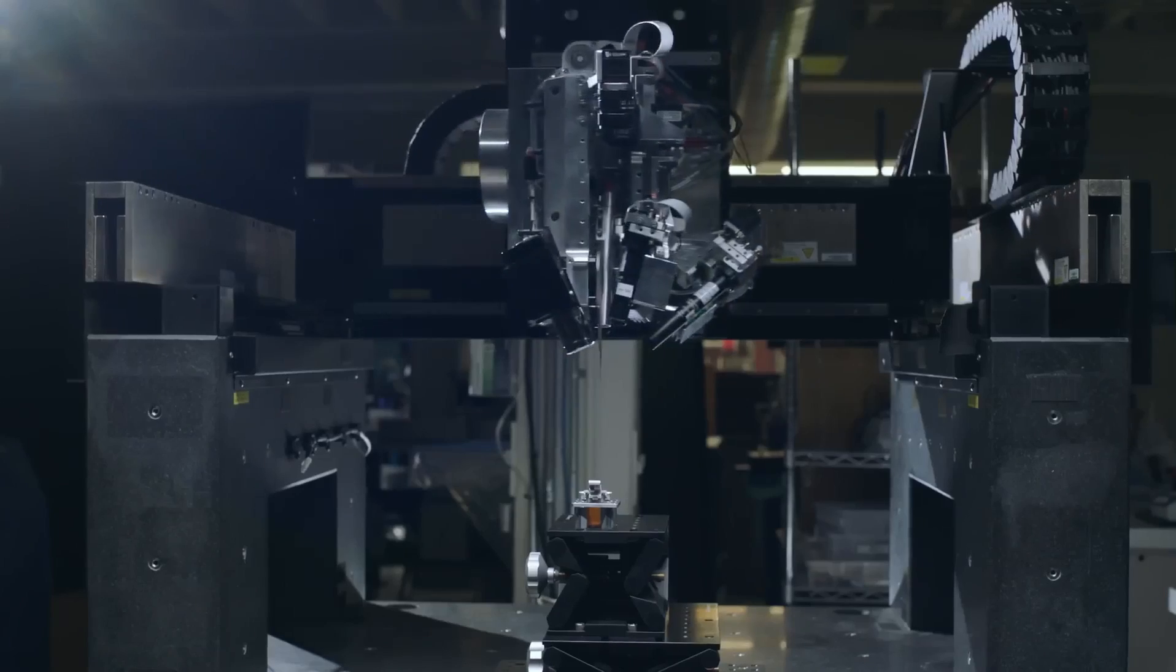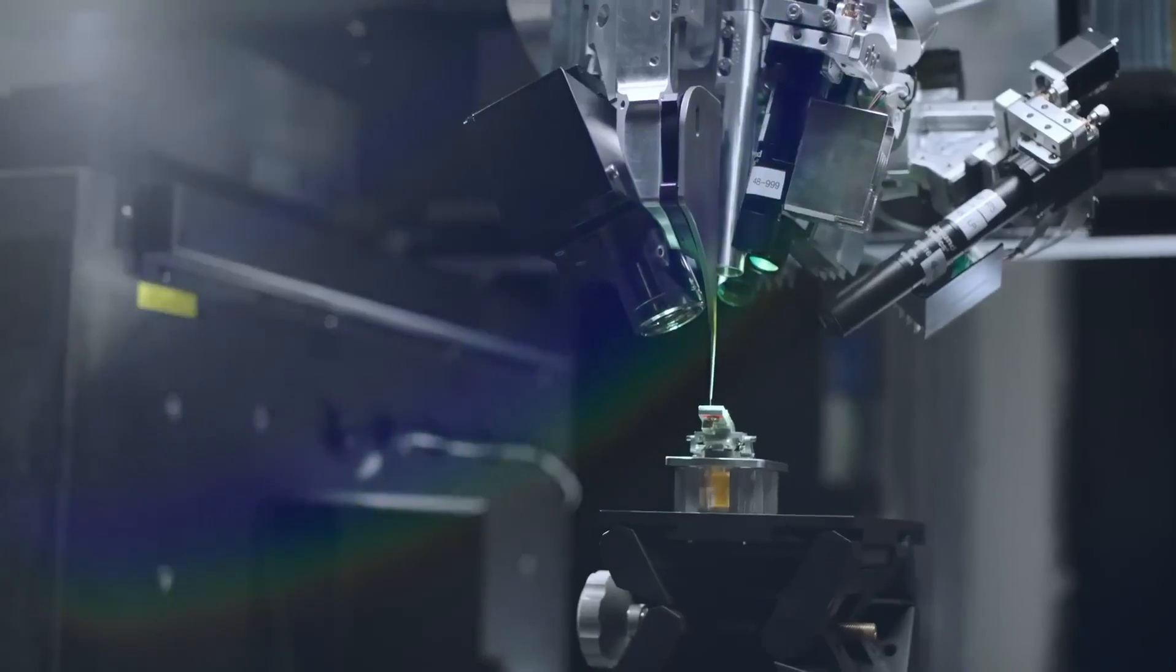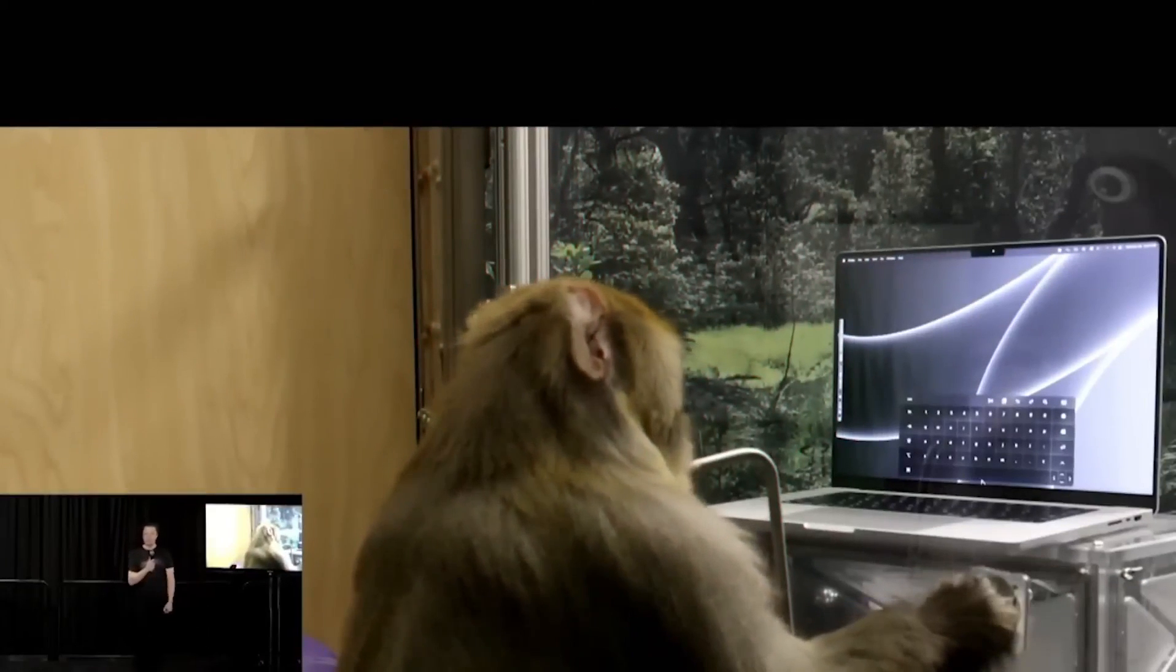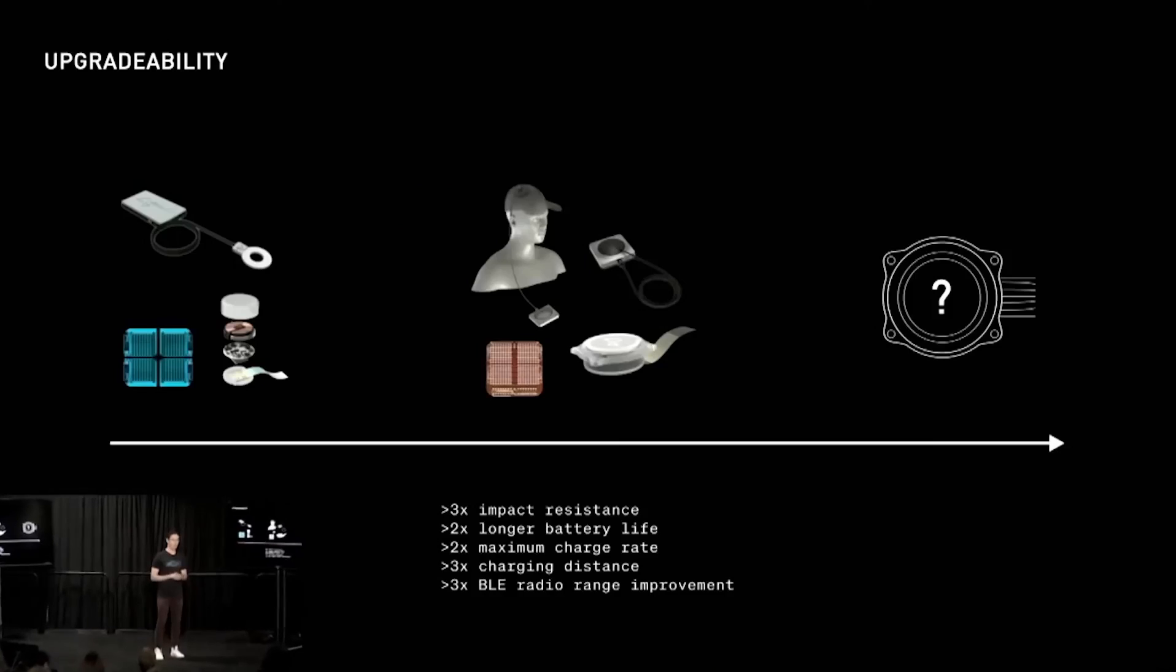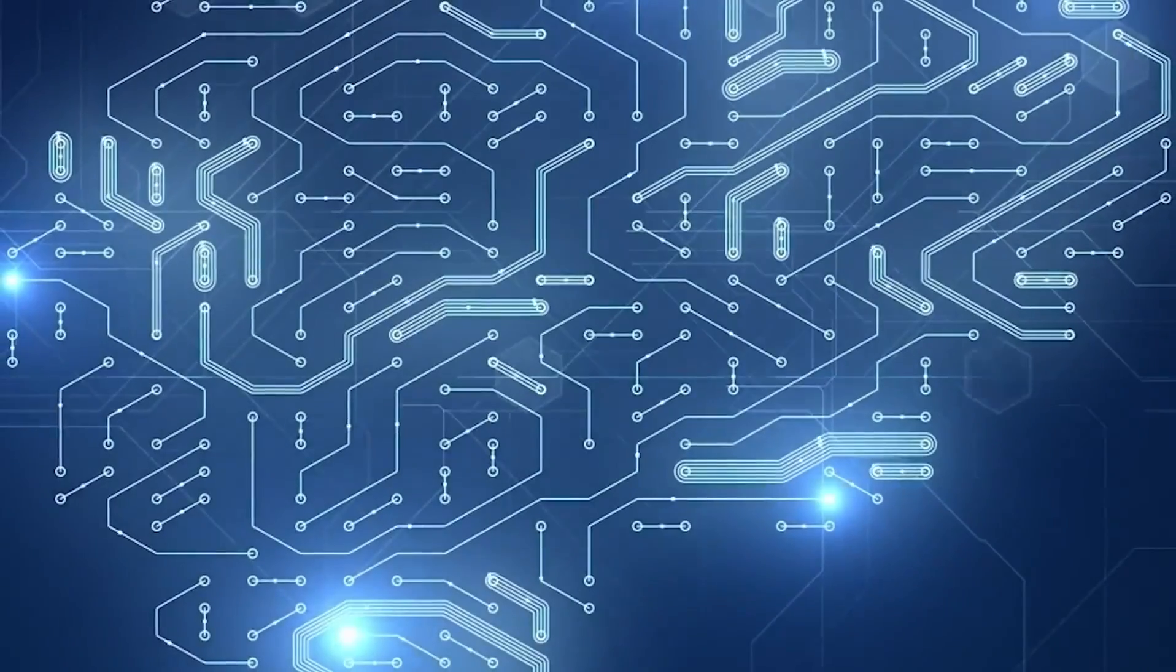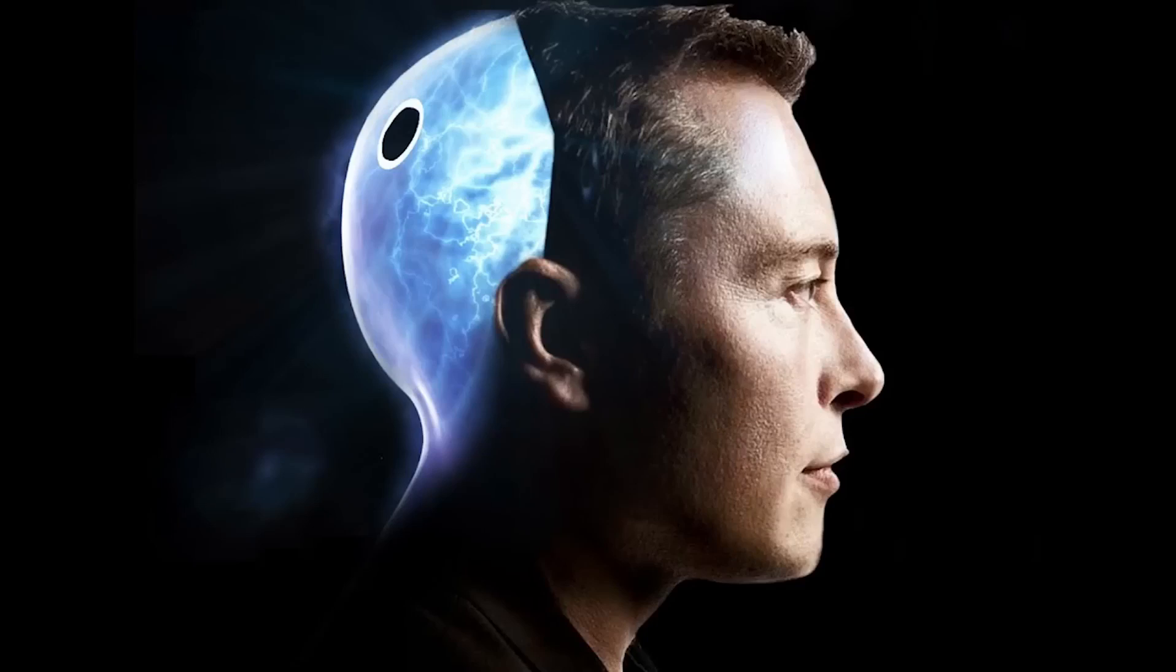However, as with any disruptive technology, ethical considerations arise. Privacy, security, and the potential for misuse must be carefully addressed to ensure the responsible development and deployment of BCIs. Neuralink acknowledges these concerns and emphasizes transparency and stringent ethical guidelines as crucial pillars of their work.